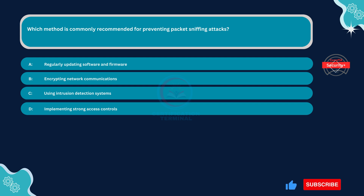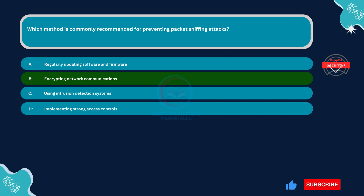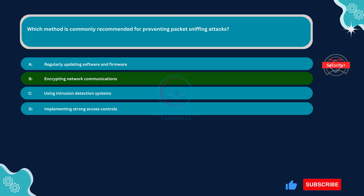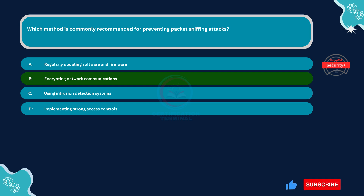The correct answer is Option B: Encrypting network communications. Encrypting network communications is a highly recommended method for preventing packet-sniffing attacks. When data is encrypted before transmission over a network, even if intercepted by a packet-sniffer, the data remains unreadable without the encryption key. This effectively prevents attackers from eavesdropping on sensitive information.